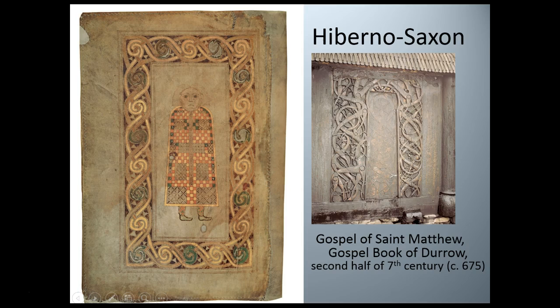This work shows the contact that Christians had with migratory tribes. The work on the right is a wooden portal of a church in Norway, and we think this is Viking. They have begun to infuse some of the migratory tribes' stylistic characteristics in their Christian work. So this is a church, but again, being influenced by and using some of the decorative migratory designs in a Christian structure.